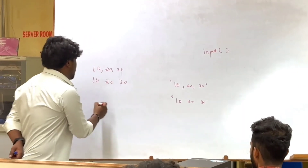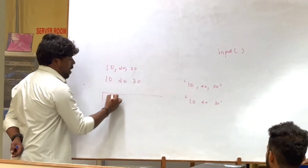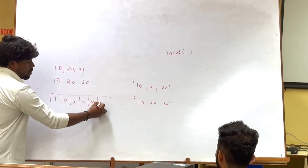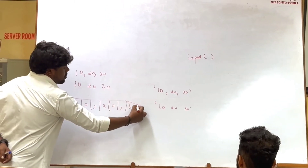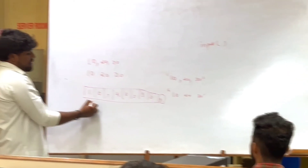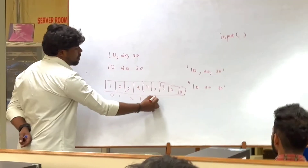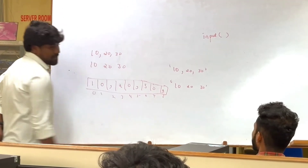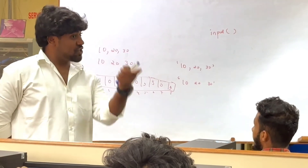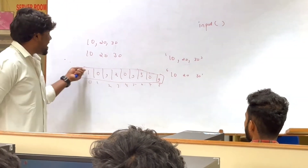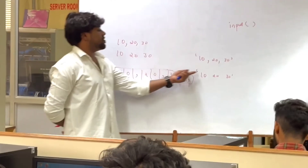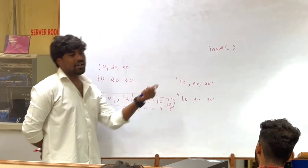How do you read this string now? It will be something like this: 10, 20, 30. And you have indexing: 0, 1, 2, 3, 4, 5, 6, 7, 8. This is exactly how your multiple data are read. In place of comma, if you have a space, you have a space separator instead.